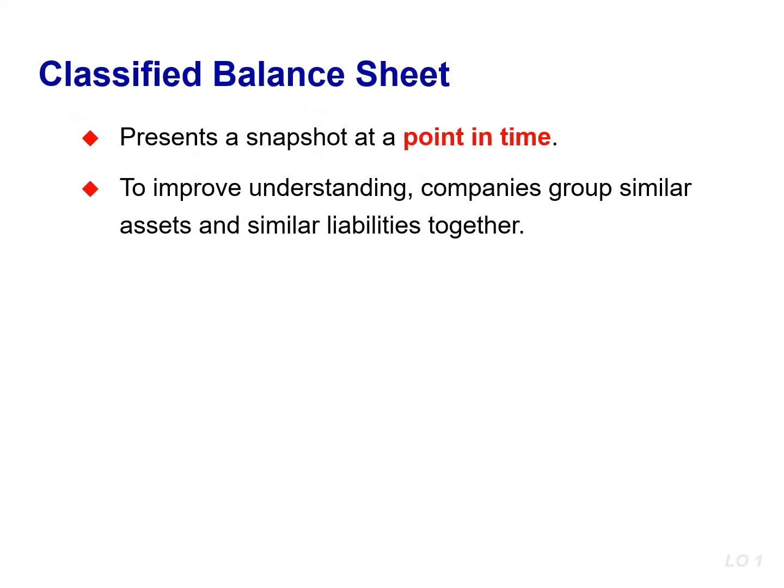In the previous chapter, you learned that a balance sheet presents a snapshot of a company's financial position at a point in time. It lists individual asset, liability, and stockholders' equity items. To improve users' understanding of a company's financial position, companies often use a classified balance sheet which groups similar assets and similar liabilities using a number of sections or subtotals. This is useful because items within a group have similar characteristics.